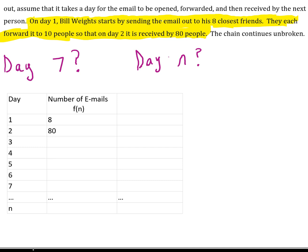Just taking that information from the highlighted sentence, I've created a table down here. The questions asked are on day seven, how many people will receive the email? And on day N, how many people will receive the email? So let's keep it going here. We have eight people on day one, 80 on day two, 800 on day three, 8,000 on day four, 80,000 on day five. I'm just multiplying by 10 every time, 800,000 on day six, and then 8 million on day seven. So we've already answered this question by using our table, 8 million.